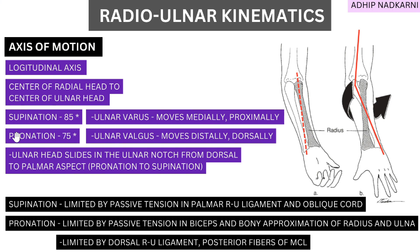Another point to add is that the ulnar head slides in the ulnar notch of the radius. At the radius there is an ulnar notch, which has a palmar and dorsal aspect as seen in the last video. As movement goes from pronation to supination, the ulnar head moves from the dorsal to the palmar aspect of the ulnar notch. Proximally, the radius spins inside the annular ligament and also over the capitulum.